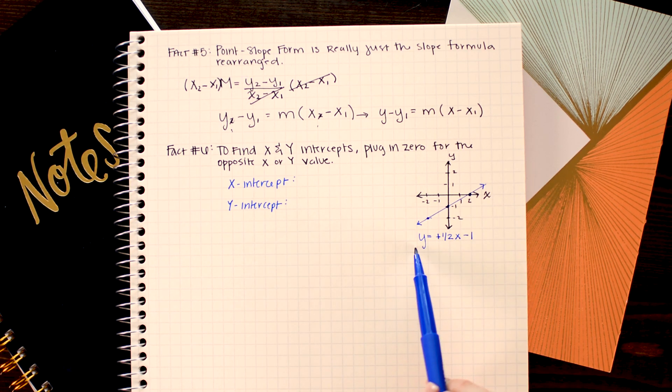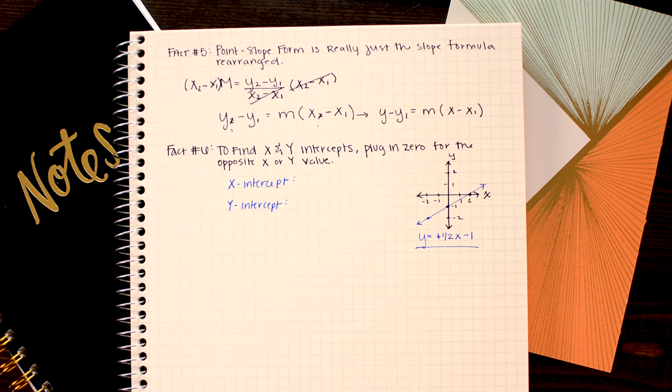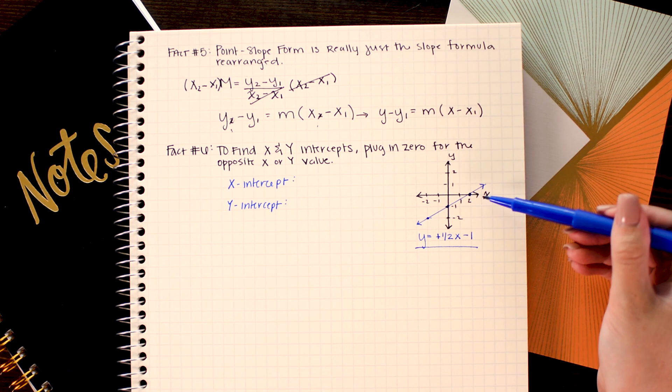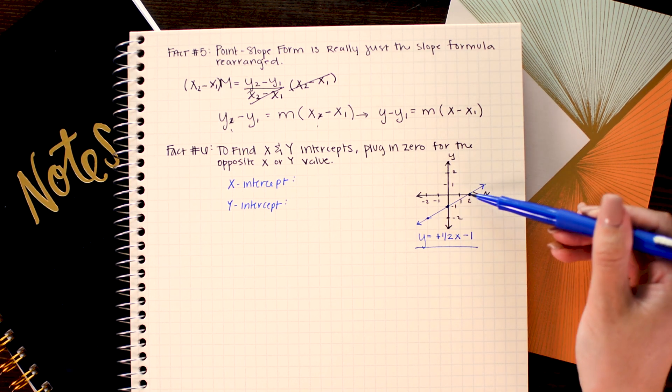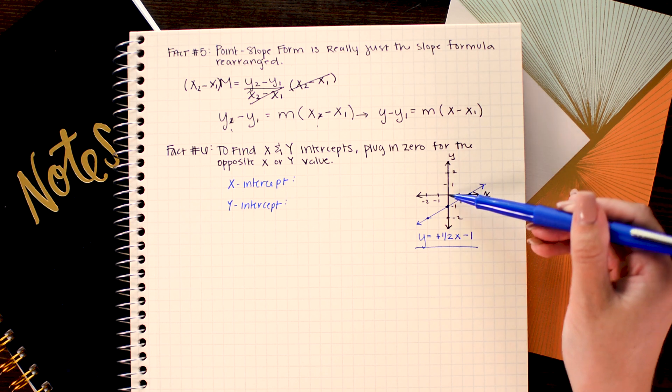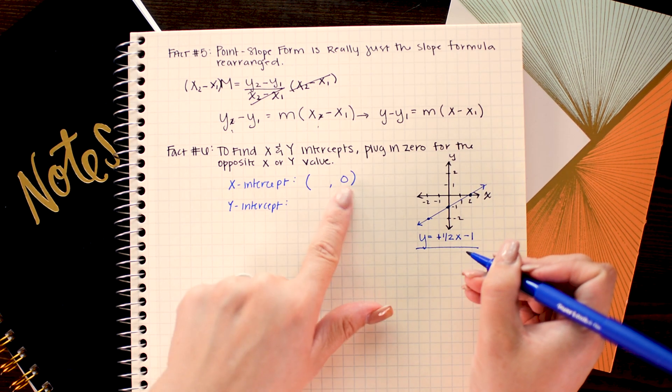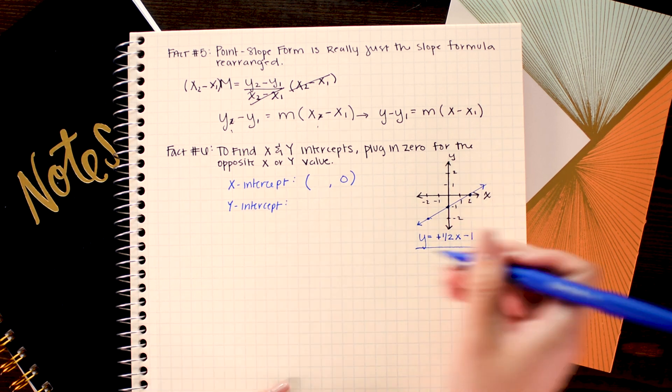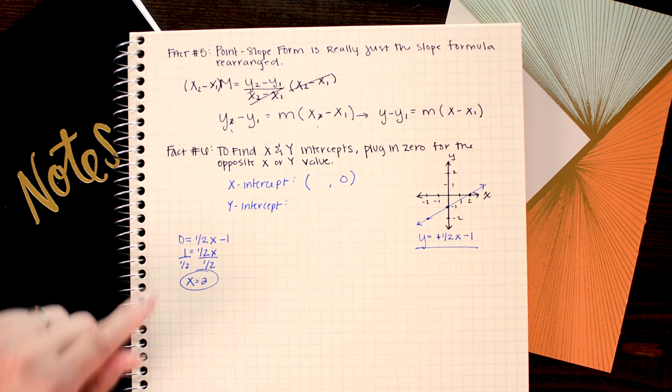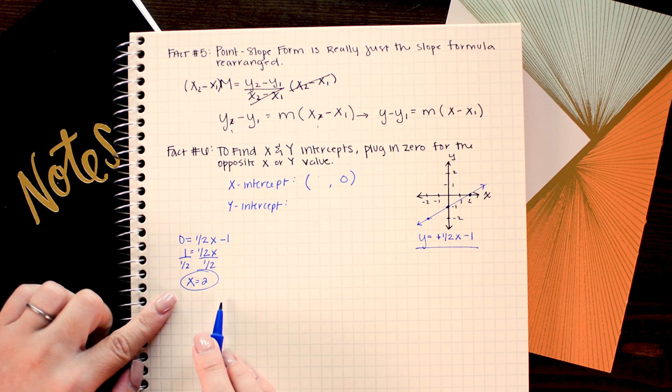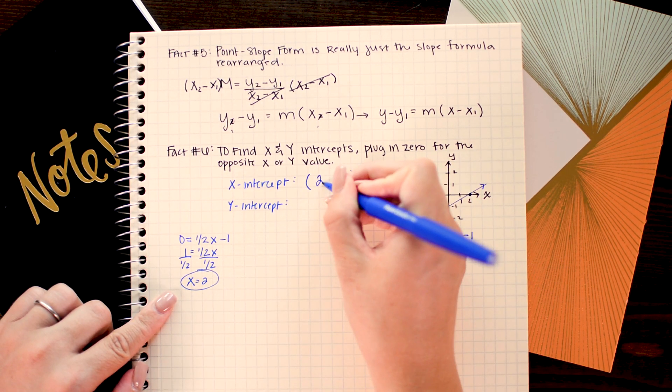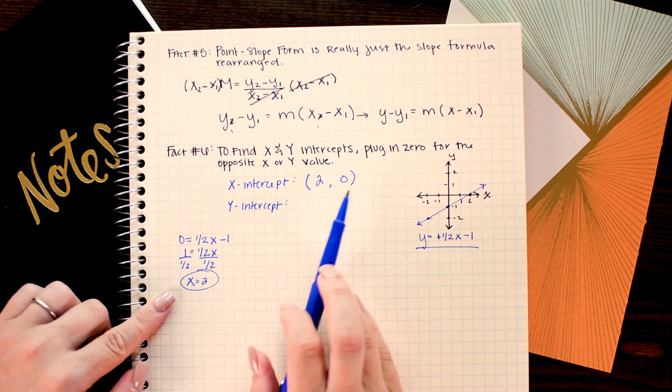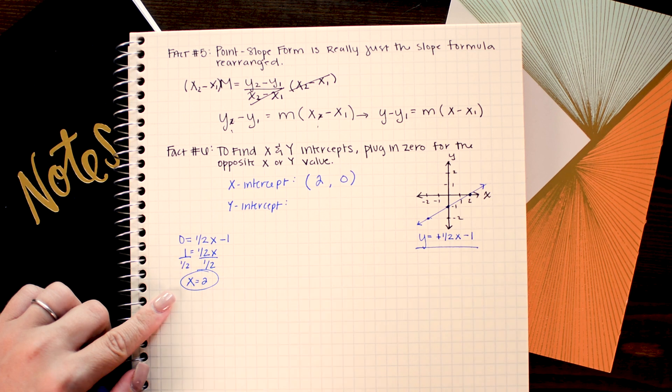To find the x or y intercept all you need to do is plug in zero for the opposite variable. If you're just working with the equation and you need to find the x and y intercept it's as easy as plugging in zero for the opposite variable. And that's because for the x intercept my y coordinate or the height of the x axis is always zero. See how it crosses through zero here? So I'm going to simply plug in zero for y and solve for x. And when I do that I get x equals two. So I simply write two in for my x coordinate and my y coordinate is zero since that's what I plugged in to our equation.